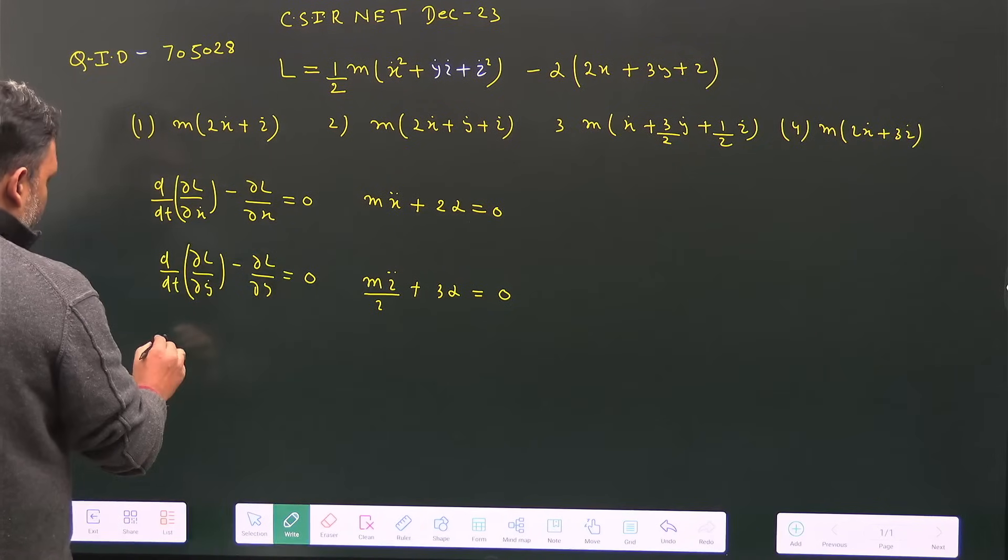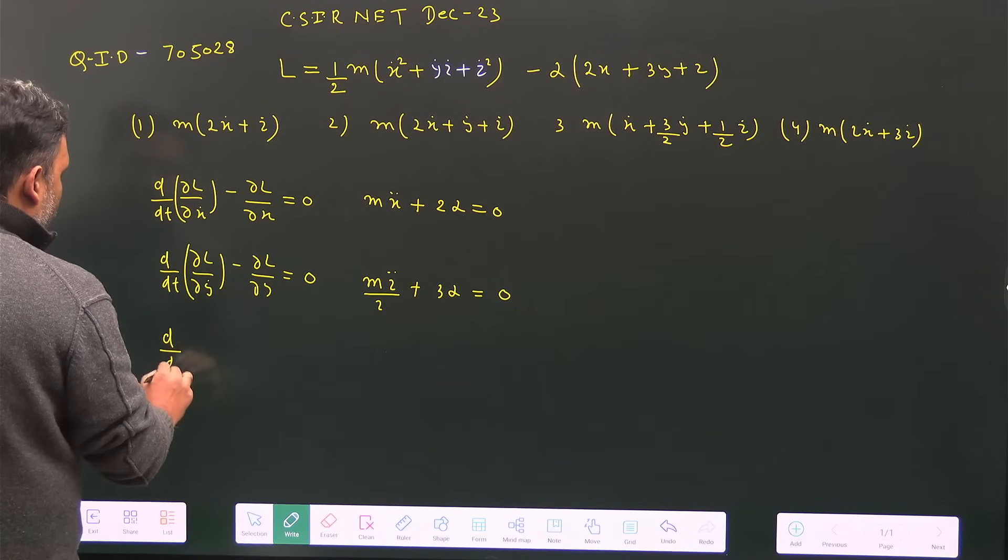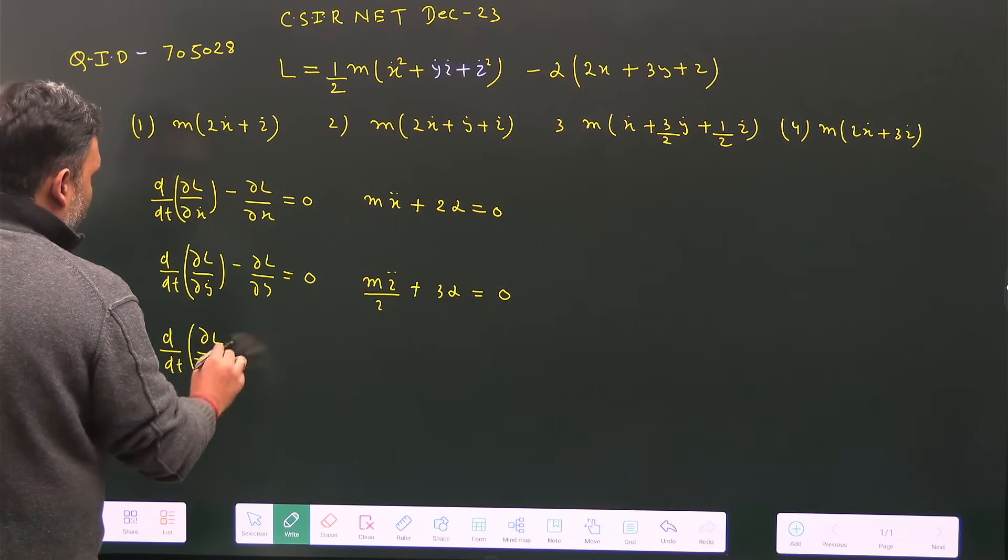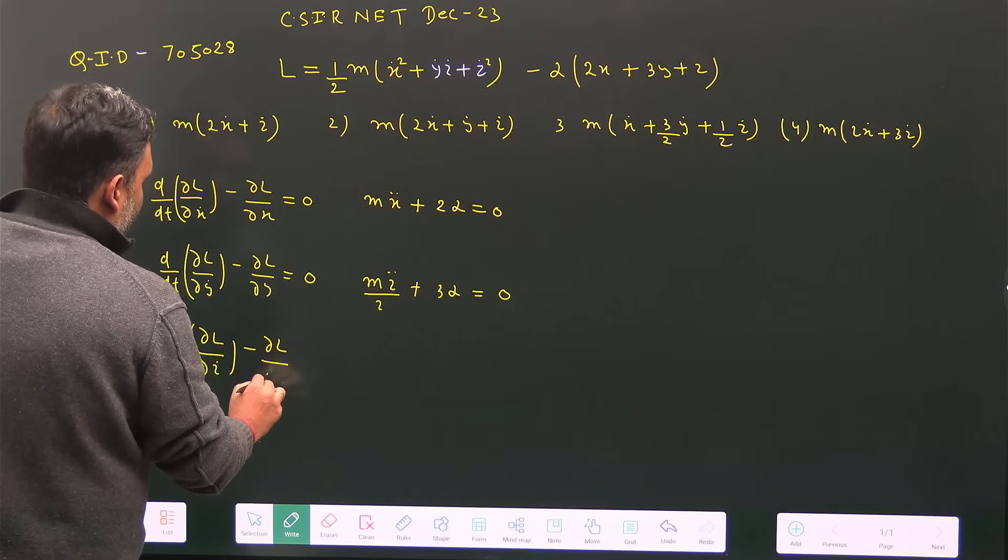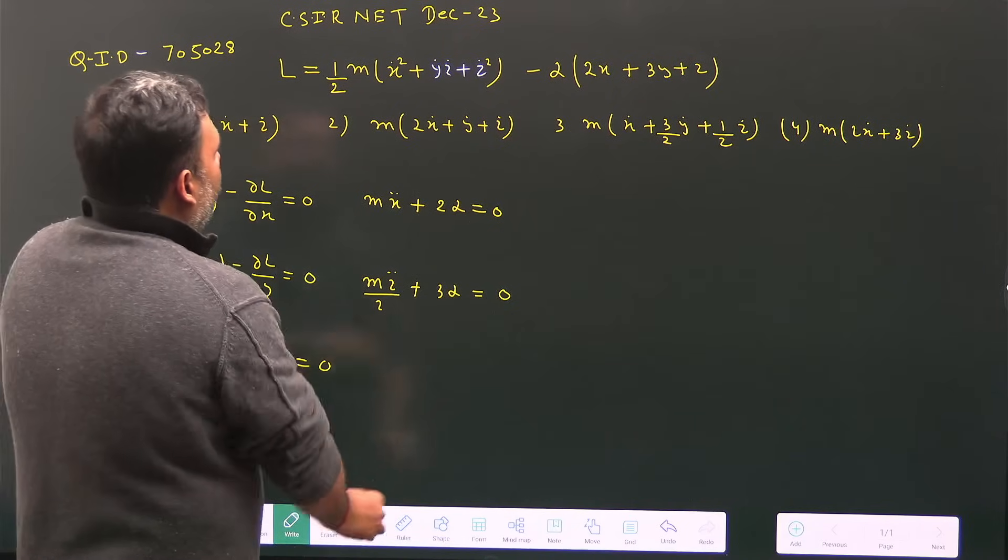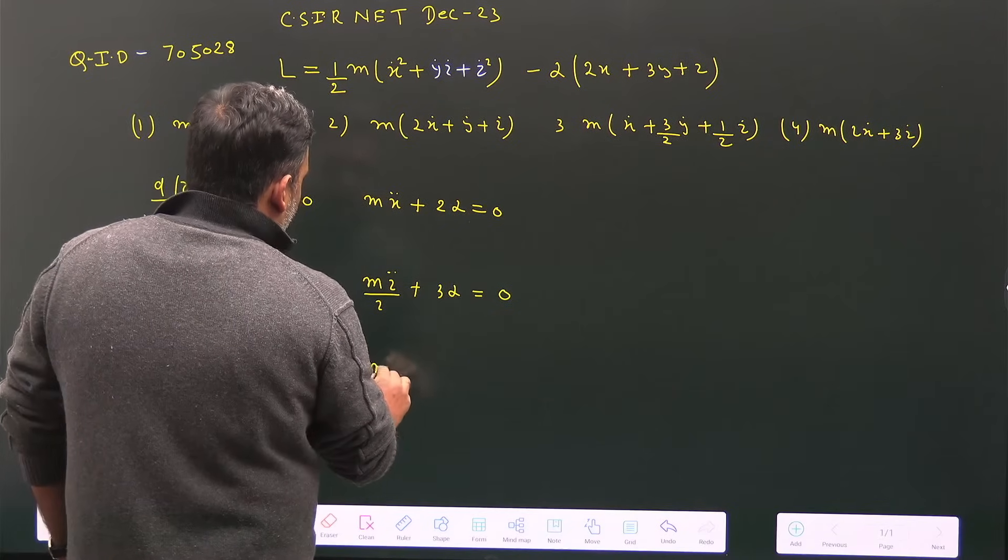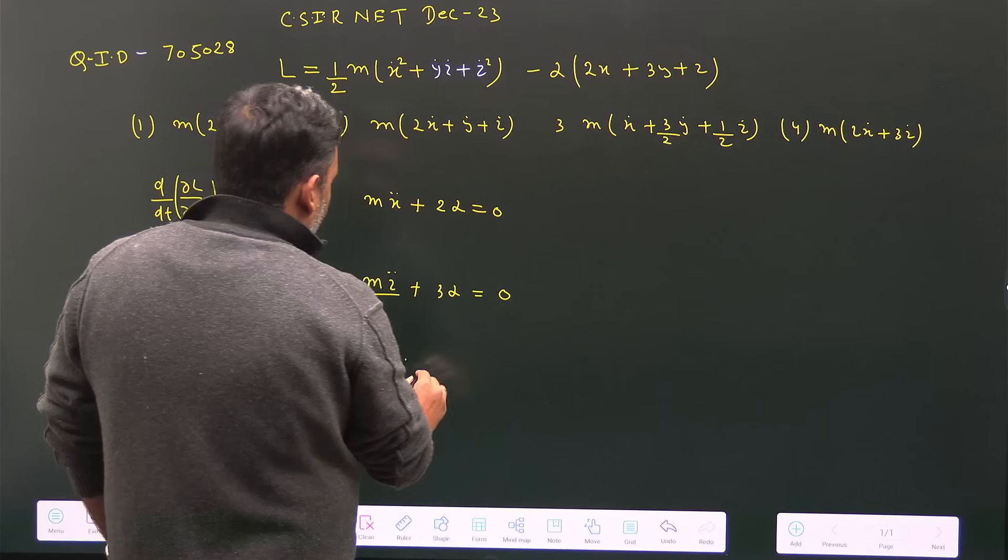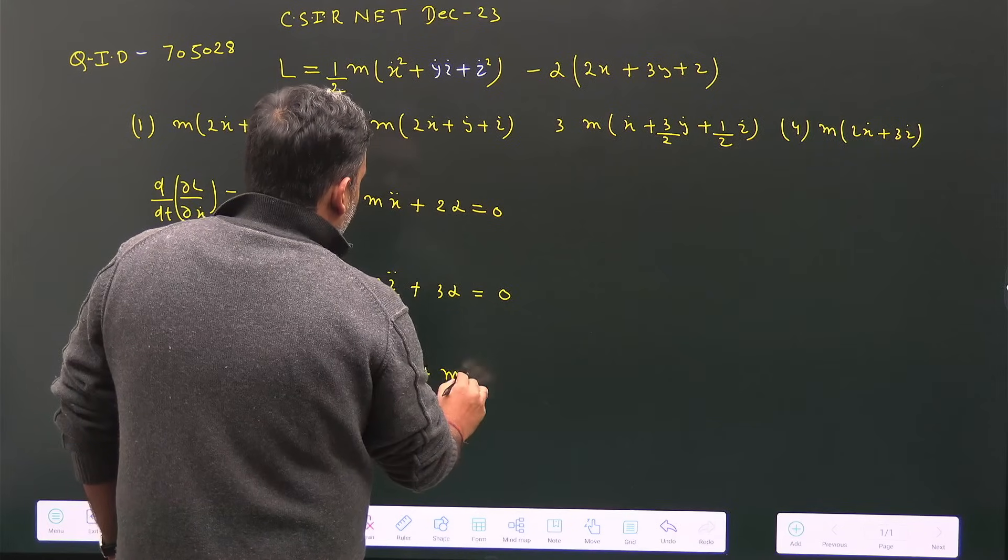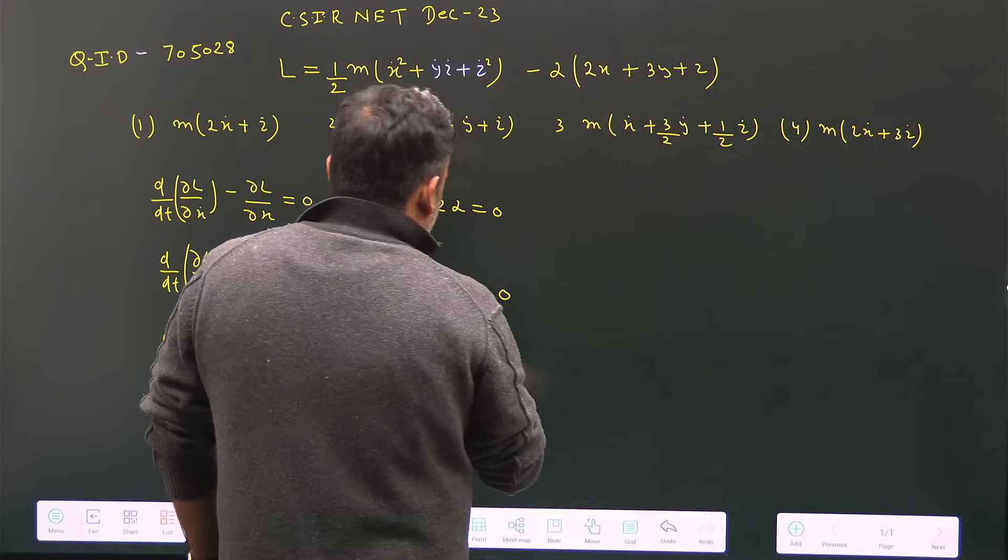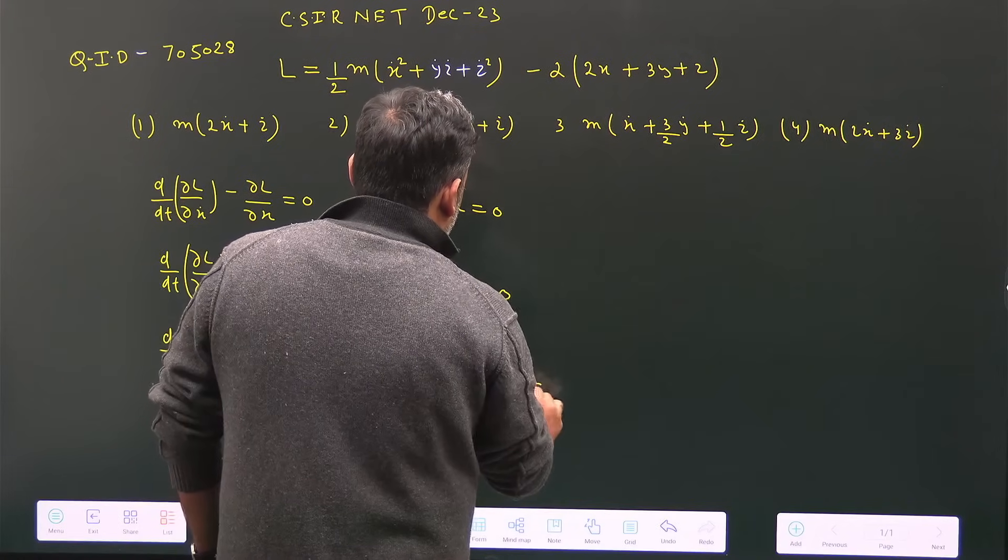For z: d/dt(∂L/∂ż) - ∂L/∂z = 0. We have mz̈ from this term and mÿ/2 will survive here, giving us mÿ/2 + α = 0.